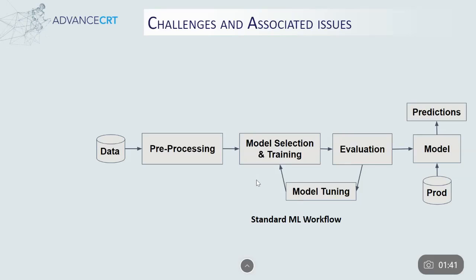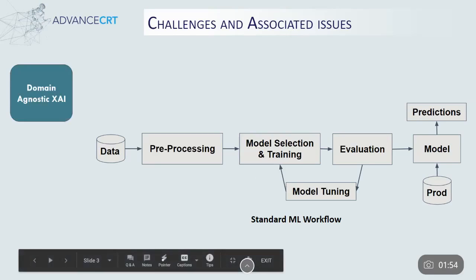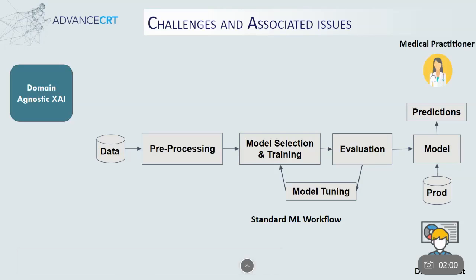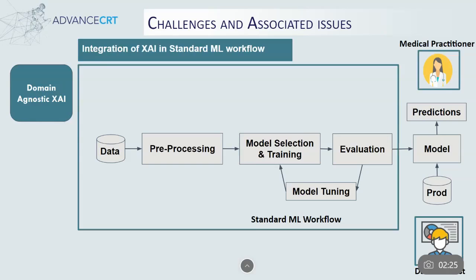Now, there are many challenges and associated issues in the domain of XAI. We will discuss some of them in the context of a standard ML workflow shown here. Designing domain-agnostic systems with XAI is challenging as explanations require context of the domain. Some explanations can be useful for a targeted perspective but trivial for others. For instance, presenting interactive visualizations to explain layers of a neural network is beneficial for data scientists but of less importance to the radiologist who uses the neural network for analyzing MRI scans. Integrating XAI in a standard ML workflow is therefore challenging as it needs to benefit multiple perspectives.